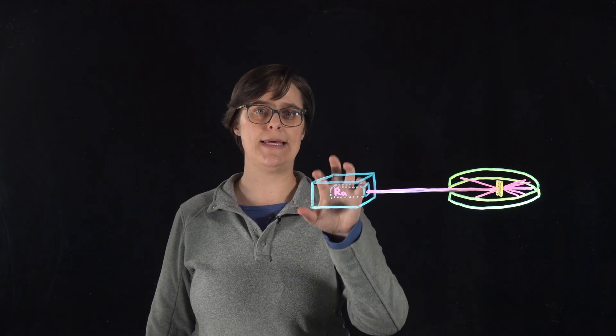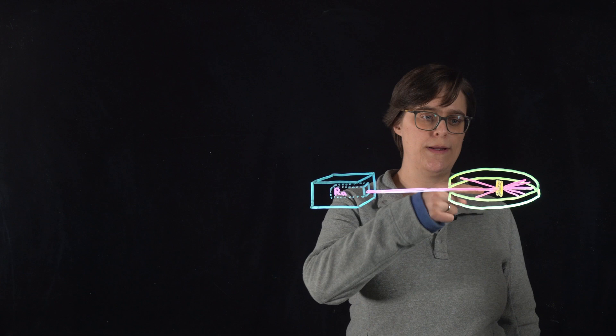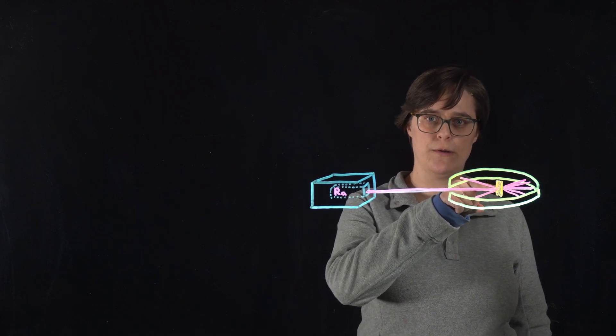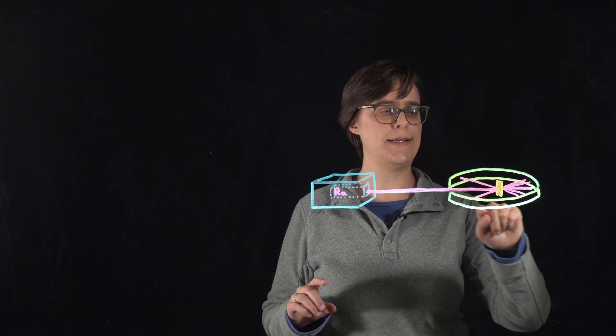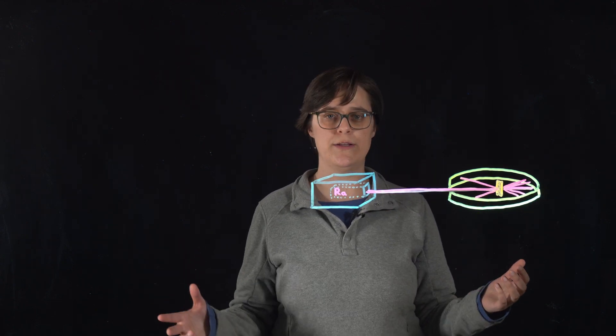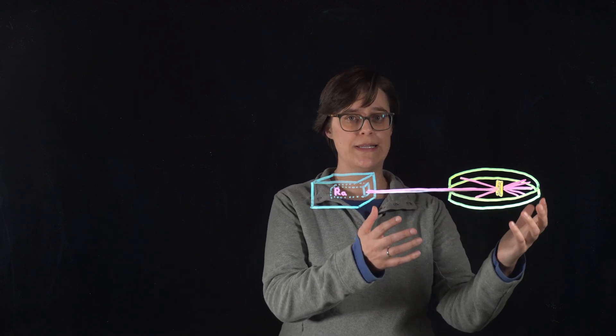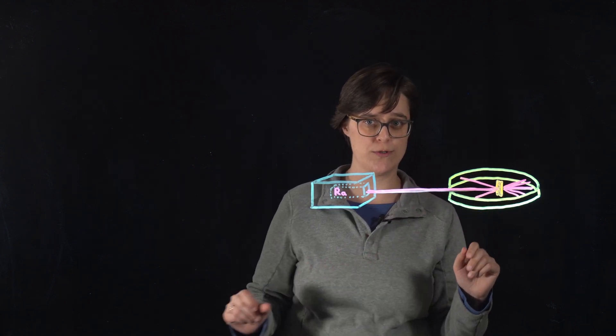He put radium in a container with a small opening and pointed that opening at the thin sheet of gold foil. This gold foil is surrounded by a detector coated with something that luminesces when alpha particles hit it, so it would light up and he would visibly be able to see where the alpha particles were hitting.